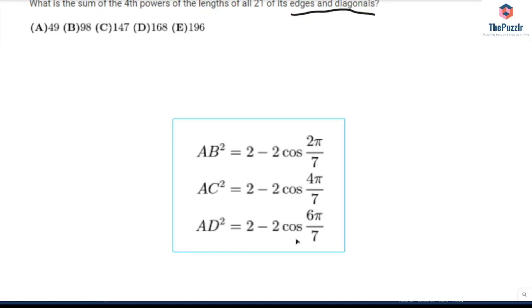And then AD squared equals 2 minus 2 cosine 6π over 7. So if you're having trouble seeing where I came up with this, make sure you search up the law of cosines. I'll put a link in the description. We use that to find each of these expressions.